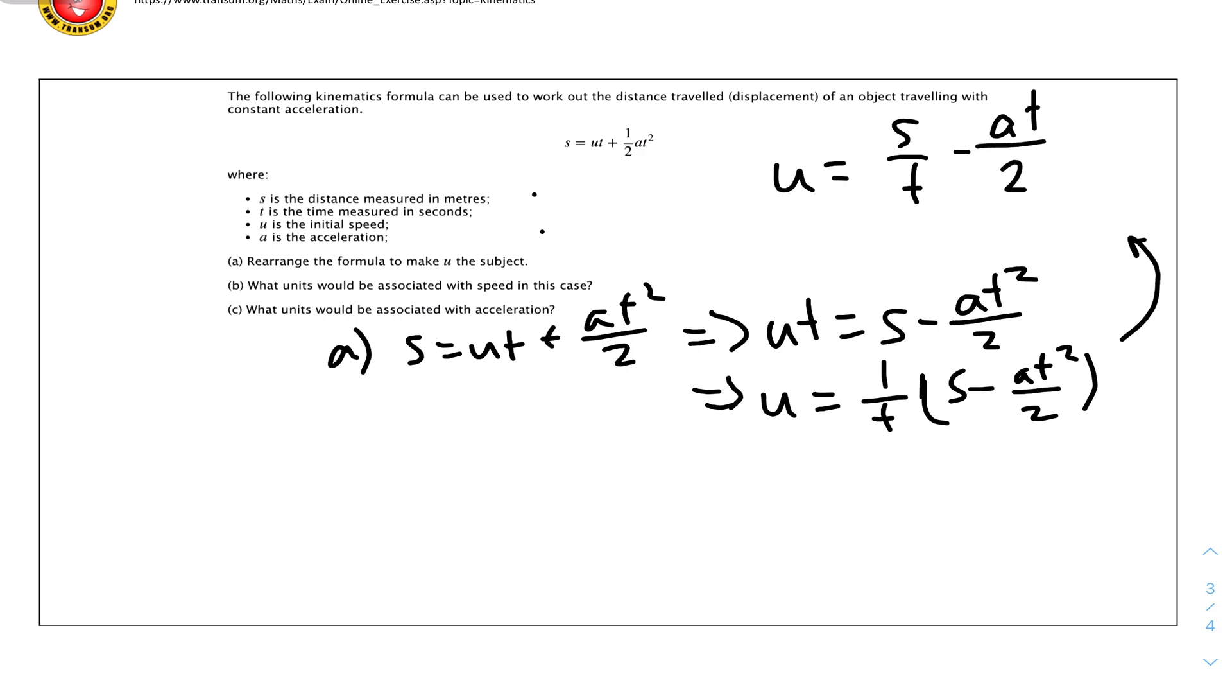So u equals s over t minus at squared over 2t. The t cancels out, so we cancel this one and this t, leaving u equals s over t minus at over 2. I could combine the denominator to 2t, but I'll leave it here so it looks simpler. Therefore u equals s over t minus at over 2. To demonstrate combining the expressions, it would be (2s minus at squared) over 2t if we combine the denominator.